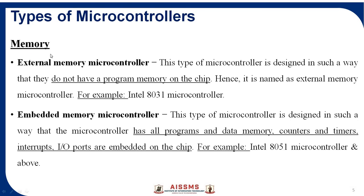The next type of microcontroller classification is by memory. There are two types: external memory microcontrollers and embedded memory microcontrollers. Nowadays, every microcontroller supports embedded memory, meaning everything — memory, counters, timers, interrupts, and input-output devices — are all embedded into a single chip. An external memory microcontroller does not have program memory on the chip; if they require any RAM or ROM, they need to connect those things externally.